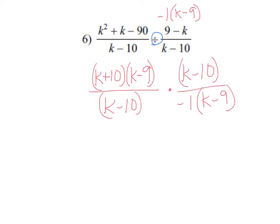This is what you should have when you factored everything, and then the k minus 10s will cancel. By pulling that negative 1 out of there, I managed to make this look identical to this. So now the k minus 9s can cross off. All I have left is a k plus 10 on the top over a negative 1.